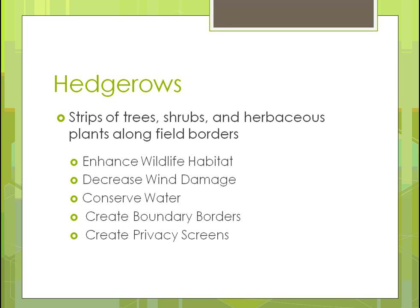Hedgerows by definition are just a strip of trees, shrubs, or herbaceous plants — herbaceous meaning they lose their leaves every year — planted along borders of the field. Benefits include increasing wildlife habitat, decreasing wind damage by stopping wind or keeping soil in place, and conserving water because the grasses retain moisture. Hedgerows also create boundaries and privacy screens, which can be good for crops, animals, or personal privacy.